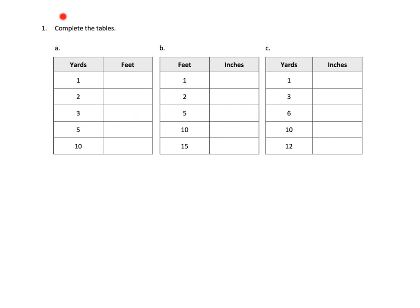So the directions say complete the tables, and we see yards and feet in this case, and we're supposed to fill in the number of feet for each of these given number of yards. So one yard is, and of course that answer is three feet, which means two yards is six feet, which means three yards is nine feet. And the idea is we're supposed to recognize you take the number of yards and times by three, and that's going to give us the feet. So two times three is six, three times three is nine.